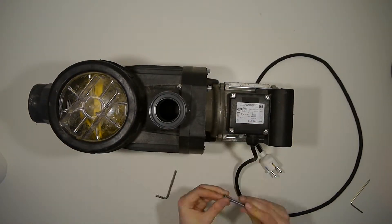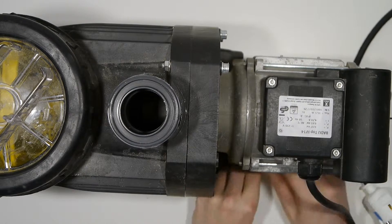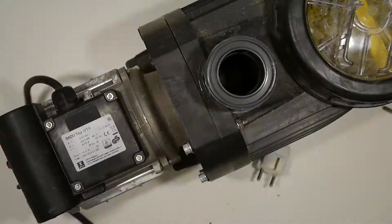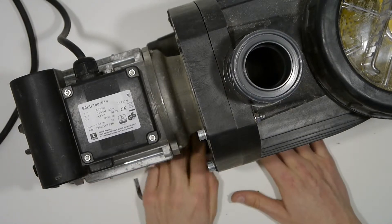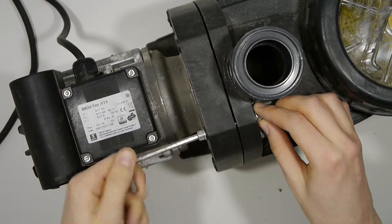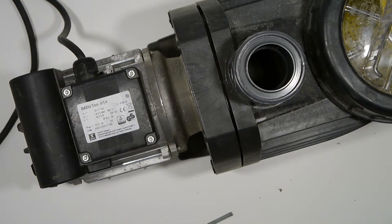Then we can open the screws separating the motor and the main plastic part here to be seen on the left where there is the water input and output.